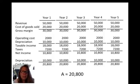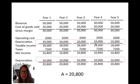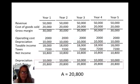Remember this example from the previous video where I laid out the cash flows. The depreciation was $10,000 per year, which resulted in a cash flow of $20,800 every year.